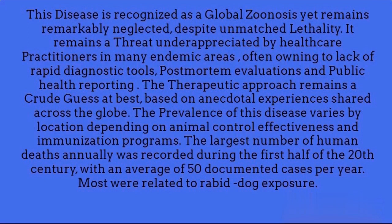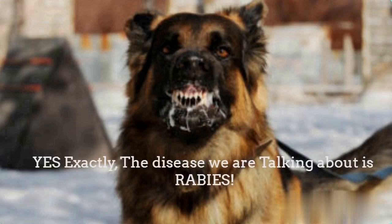The prevalence of this disease varies by location, depending on animal control effectiveness and immunization programs. The largest number of human deaths annually was recorded during the first half of the 20th century, with an average of 50 documented cases per year. Most were related to rabid dog exposure. The disease we are talking about is rabies. Take a look at its etiology.